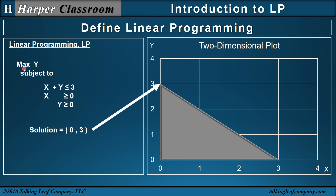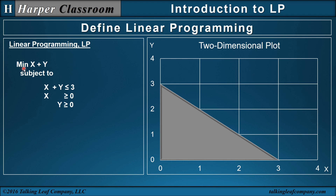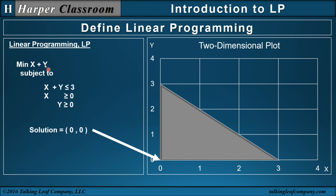Let me change the max to a min, and let me include both x and y here. What's the minimum of x plus y? If I add x and y together, the minimum is going to be that point right there — so (0, 0) is the solution to this LP.